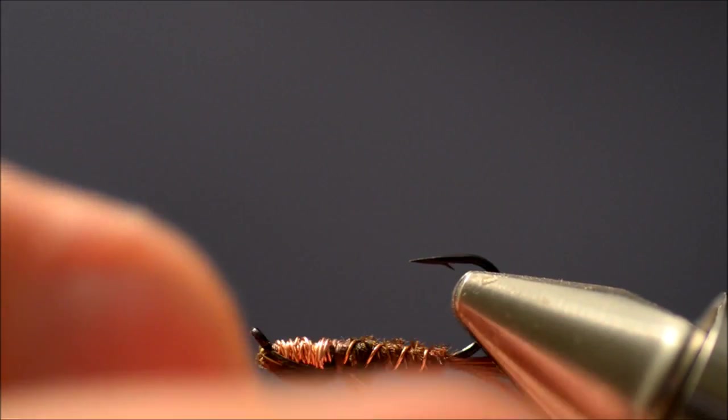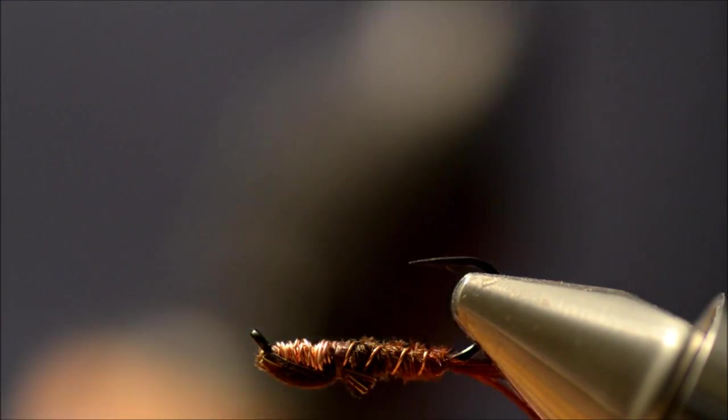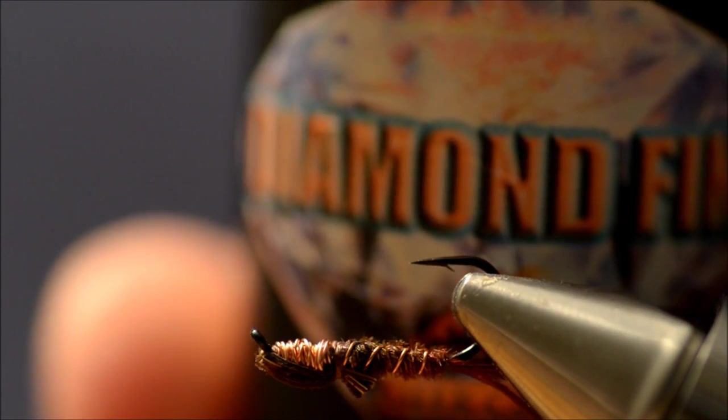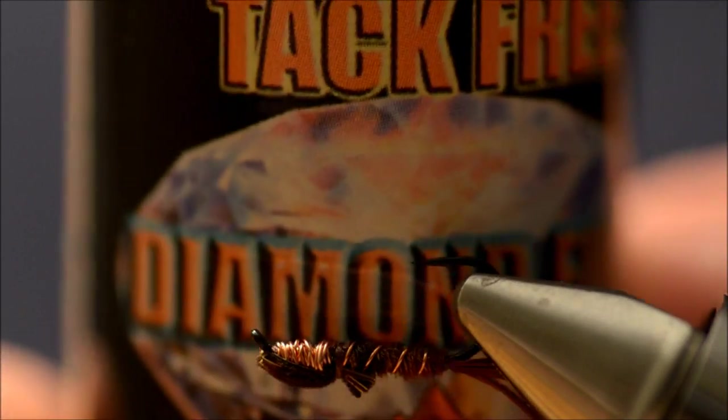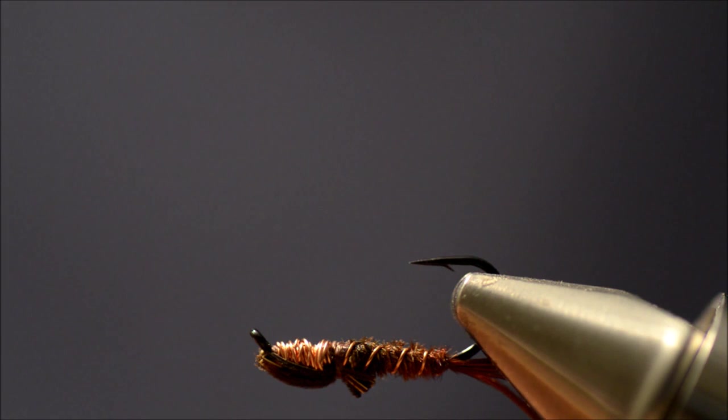Now, to make the fly just a bit more hardy, I'm going to take some diamond fine. You see there, which is a UV resin. This is a thinner version of the diamond heart.